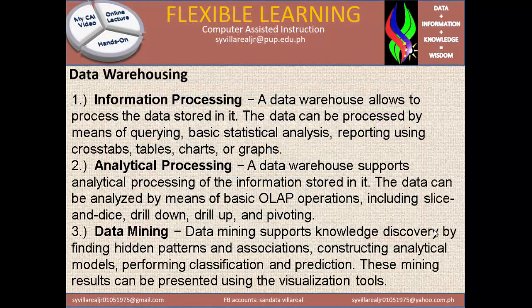Under Types of Data Warehouse, Information Processing means a data warehouse allows processing of the data stored in it. The data can be processed by means of querying, basic statistical analysis, and reporting using crosstabs, tables, charts, or graphs. This output can be a hard copy or soft copy print. You cannot have the information without the data.